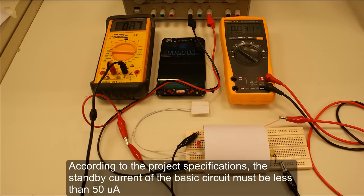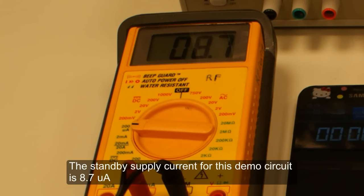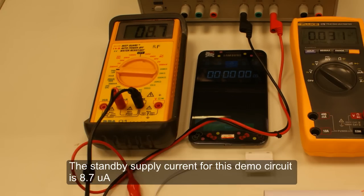According to the project specifications, the standby current of the basic circuit must be less than 50 microamperes. The standby supply current for this demo circuit is 8.7 microamperes.